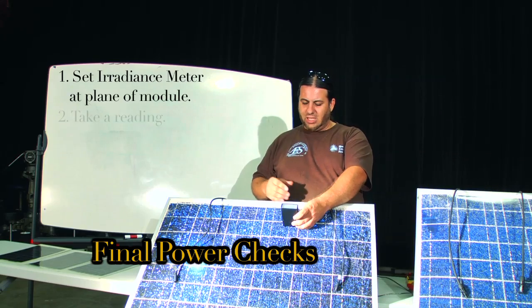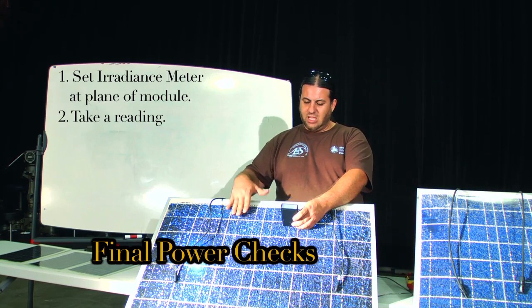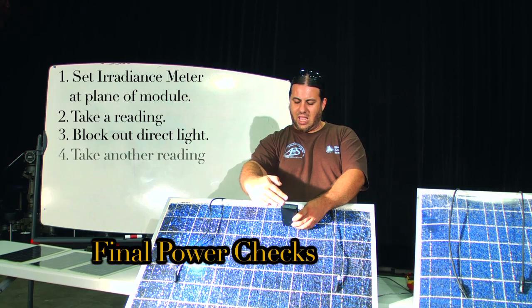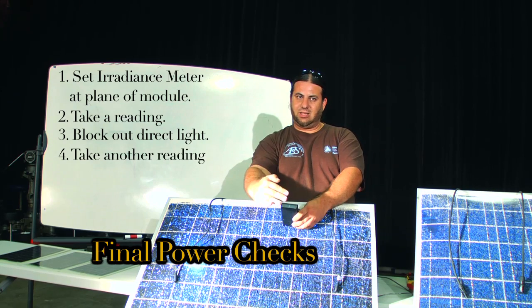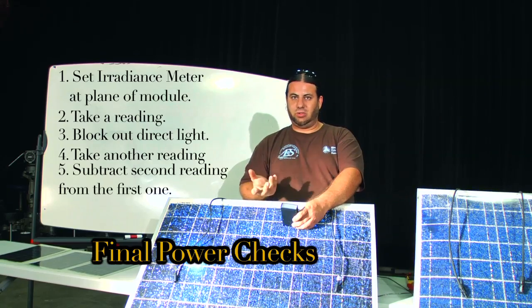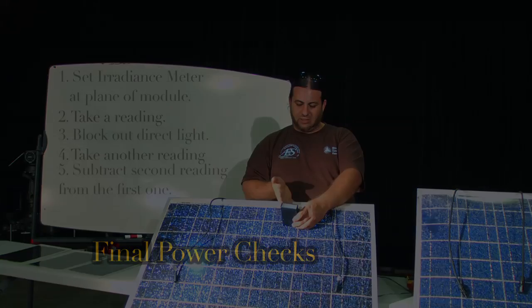You get one of these, you put it at the plane of the solar module, and then you block it out. You shade it and you've blocked out the direct light. And whatever's left is diffuse light. And you subtract that from the total, and then that's what you have is direct light.